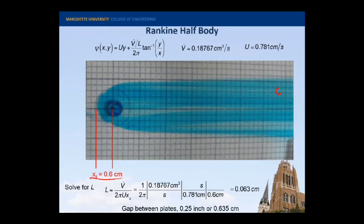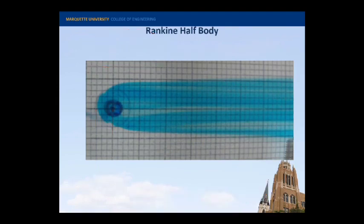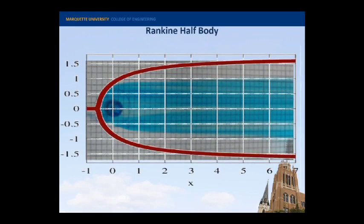So I can take this data now, and I can go into MATLAB, and I can program in our streamline, and I can plot what the streamline looks like given this flow rate, given this free stream velocity, and given this line length for the point source. When I do that, I can superimpose then the image that we get onto the photograph, and this is what I see. I've stretched this out so that the origin falls directly onto the point source. So this is the streamline.